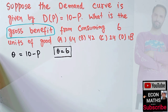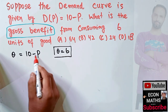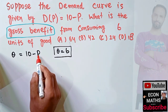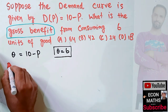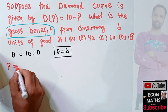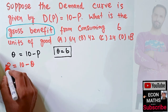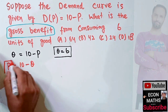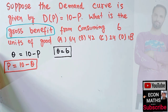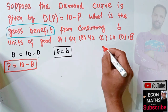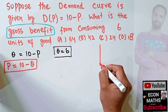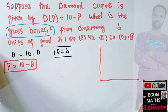The first thing we do is solve this function for price. Transposing P, we get P = 10 minus Q. Then we graph it.